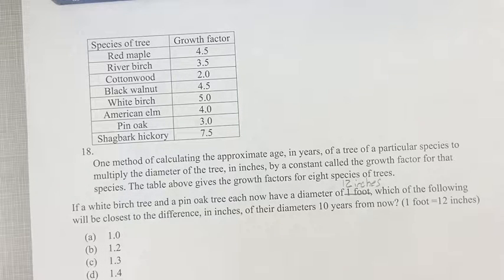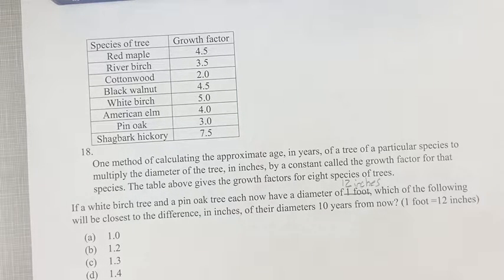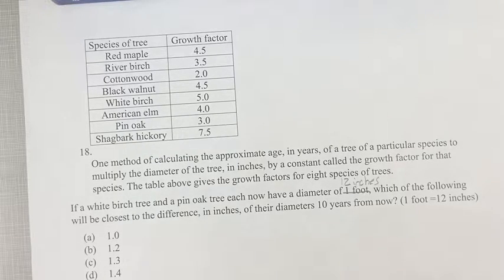So the first thing we're gonna have to do is we're gonna have to find the age of these trees. They're gonna be different because a tree that grows really fast is going to be younger than a tree that grows really slow if they're the same size.